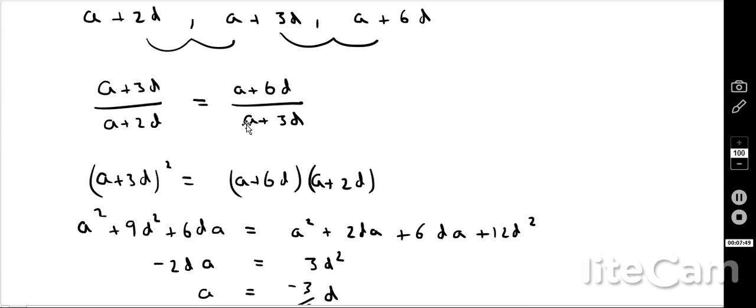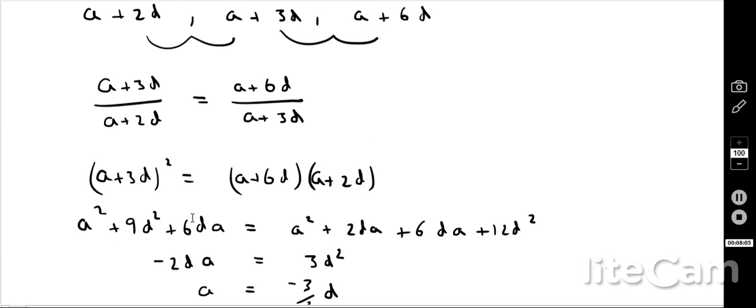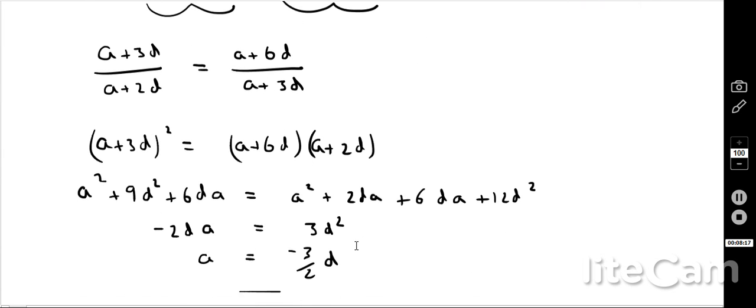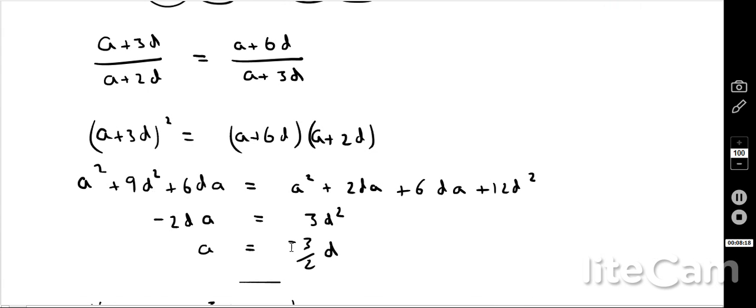Okay, so once I've got that, I can cross multiply. So I'll bring this bottom part here over to the top part here, bottom part here, the top part here. And I end up with this. So basically just some double brackets to expand. If I do expand those brackets, I'll get those A squareds and D squareds and DAs. If I simplify that, I will actually get A equals minus 3 over 2D, which is what the question asks.